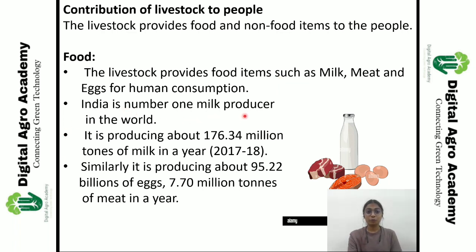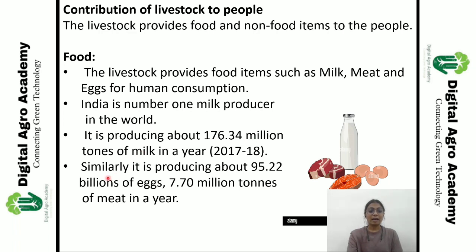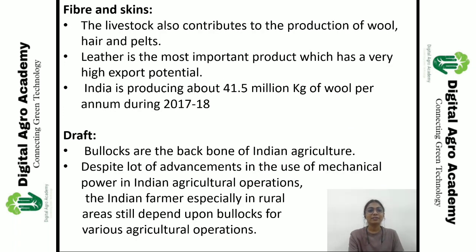India is the number one milk producer, producing about 176.34 million tons of milk per year. Similarly, it is producing about 95.22 billion eggs and 7.70 million tons of meat in a year — a huge contribution to the food sector from livestock. After food, the next contribution is fiber and skin.